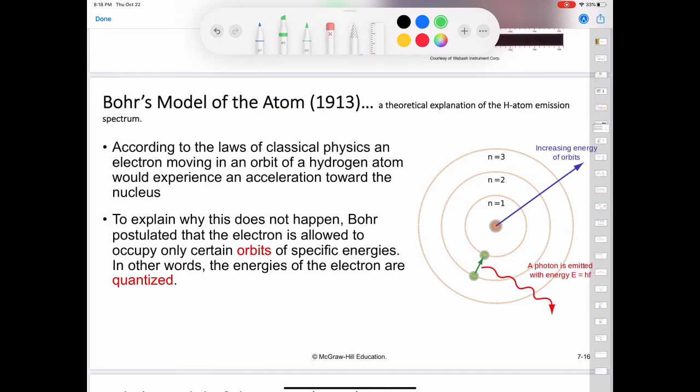According to the classical laws of physics, however, an electron moving in an orbit of a hydrogen atom would experience an acceleration toward the nucleus by radiating away energy in the form of electromagnetic waves. Thus, such an electron would quickly spiral into the nucleus and annihilate itself within the proton. To explain why this does not happen, Bohr postulated that the electron is allowed to occupy only certain orbits of specific energies.